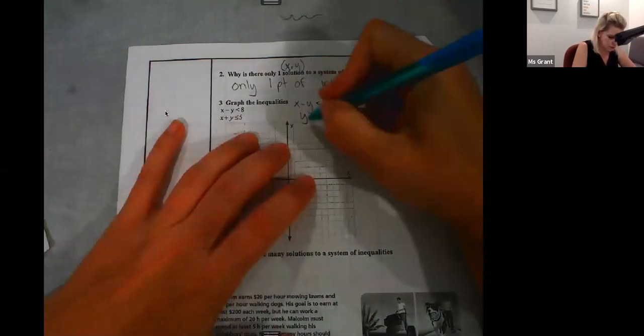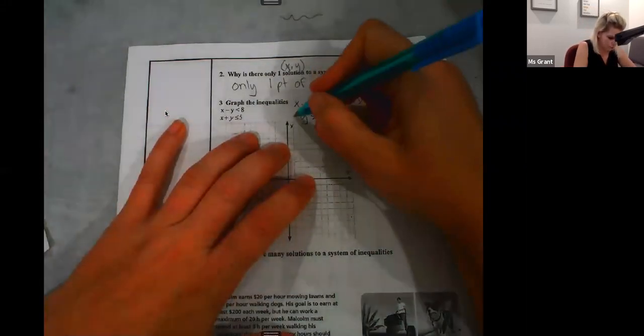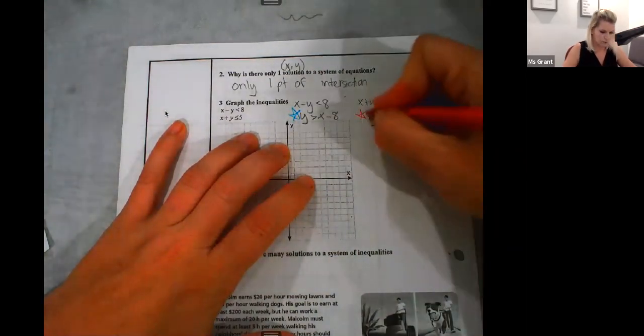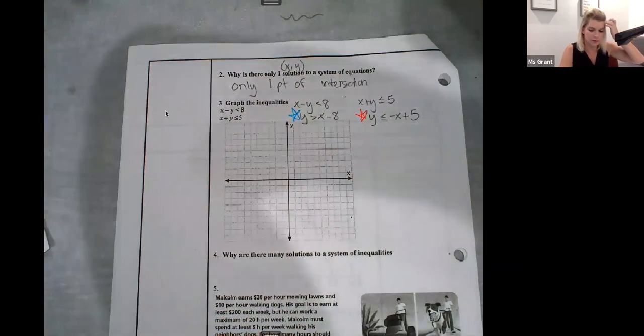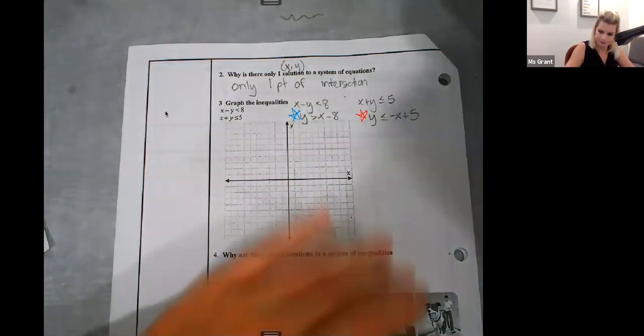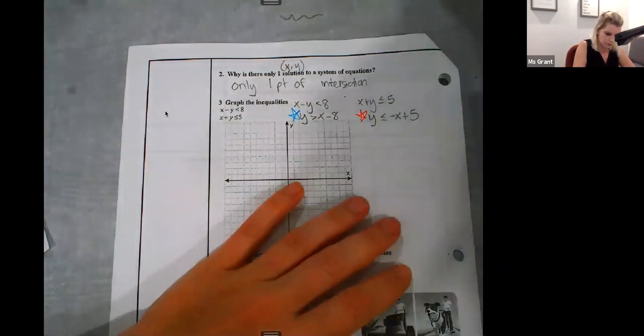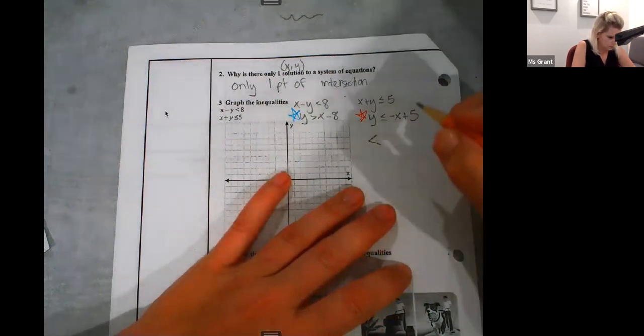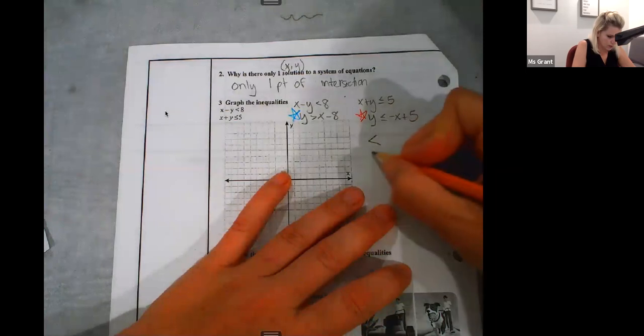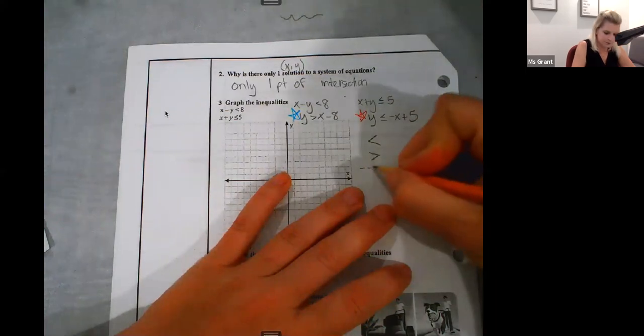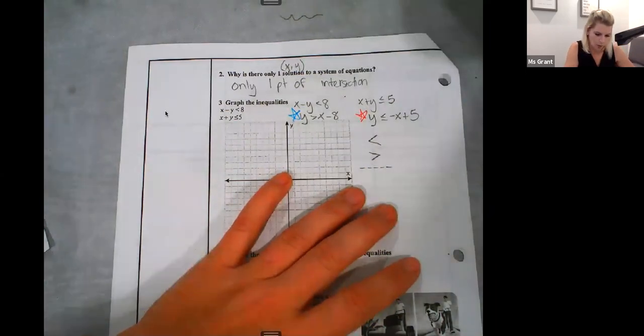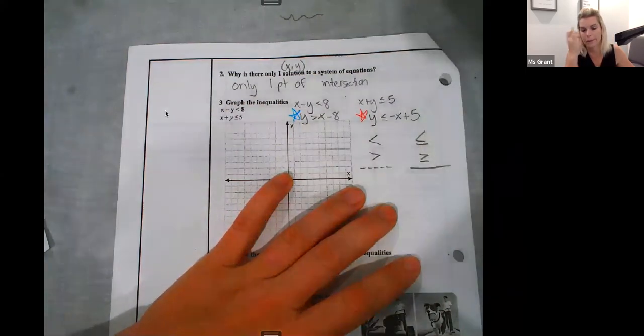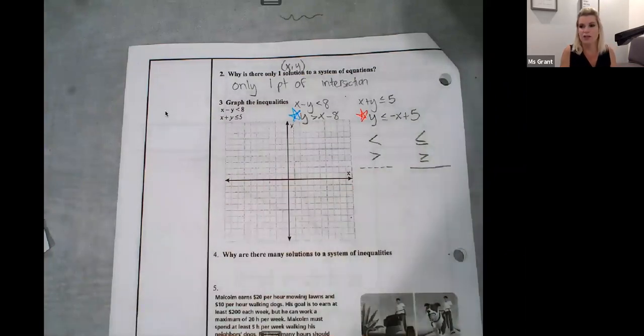I'm going to graph this in blue and this in red. Here's something you need to remember. When I have a less than or greater than, it's a dotted line. When I have a less than or equal to or greater than or equal to, it's a solid line. So, we need to know that when we shade.